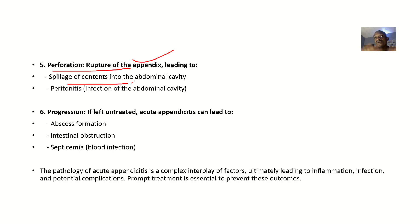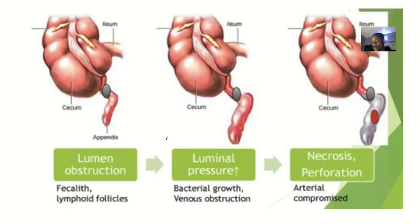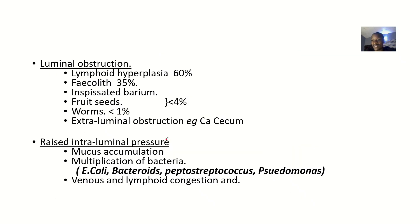When the appendix perforates, it leads to spillage of its contents into the abdominal cavity. The infection can then spread to other parts of the abdomen, most commonly affecting the peritoneal cavity — causing peritonitis, which is inflammation of the peritoneal cavity. If left untreated, acute appendicitis can lead to abscess formation, intestinal obstruction, and septicemia, which is a blood infection.